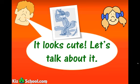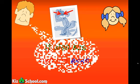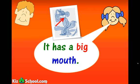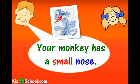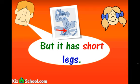It looks cute. Let's talk about it. It has two big ears. It also has two big eyes. It has a big mouth. Your monkey has a small nose. It has long arms. But it has short legs.